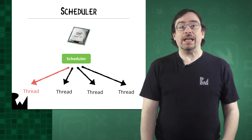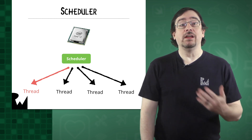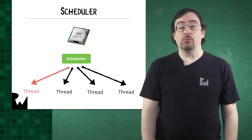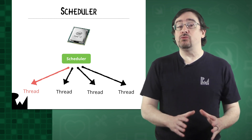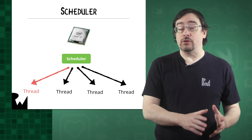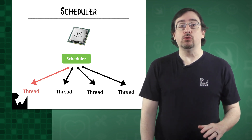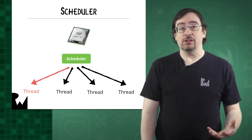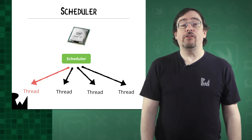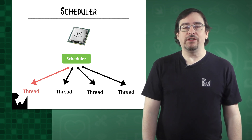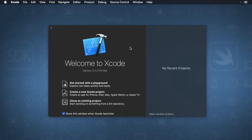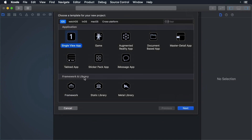So you've seen how code runs on threads and learned how we work on the main thread — this is where our user interface updates. But what happens if we do too much work on the main thread? To find out, follow along with this demo. To get started, create a new project in Xcode and select the single view app project template.